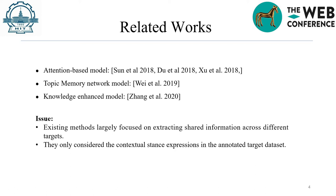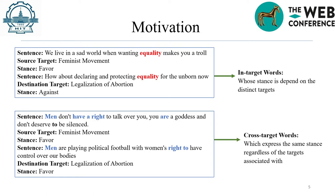Existing methods largely focus on extracting shared information across different targets, and they only consider the contextual stance expressions in the annotated target dataset. Noting that the stance expression relating to the word 'equality' presents the opposite stance for two different targets — directly employing the stance information associated with the source target for learning the stance representation of the destination target may produce wrong results.